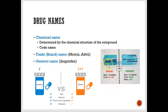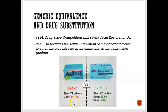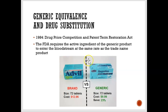Here we can see a brand name product versus a no-name generic. Notice the price difference — the brand name is $12.96 whereas the generic is $9.99. So when you're in the pharmacy aisle wondering whether to take Advil or the no-name ibuprofen, the textbook answer is that it really doesn't matter — they both have the same ingredients and work just as well.